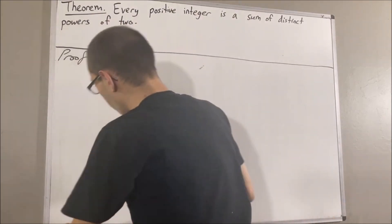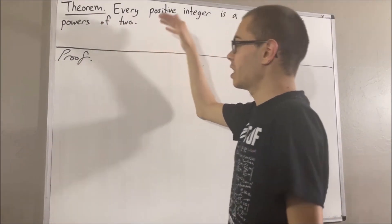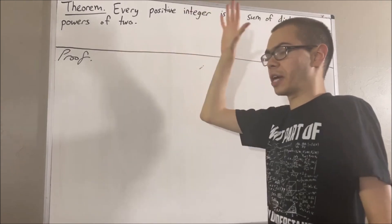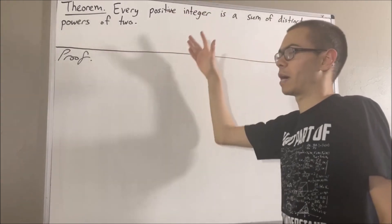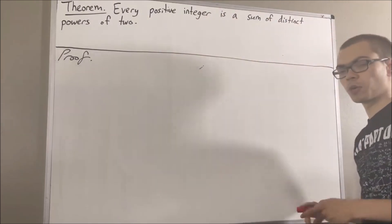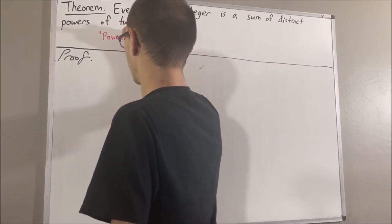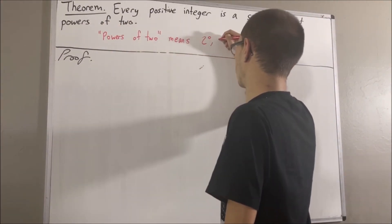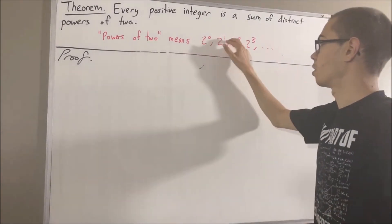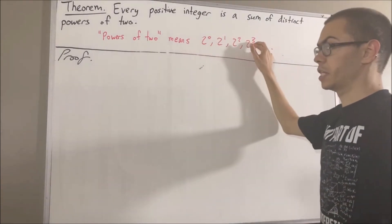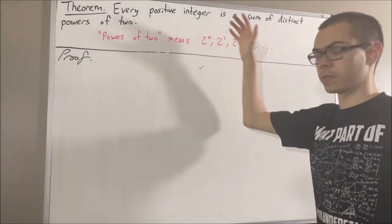Now, when we say powers of two, we mean numbers like two to the power of zero, two to the power of one, two to the power of two, two to the power of three, and so on and so forth. The power must be an integer greater than or equal to zero for our purposes.